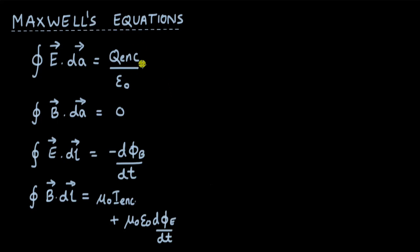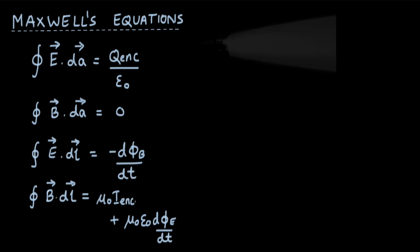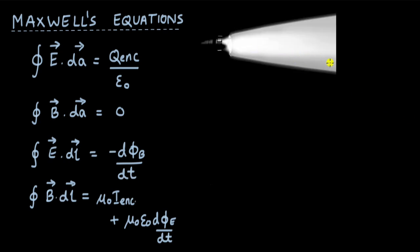These are Maxwell's equations, which describe the behavior of electric and magnetic fields and how they relate to each other. We also know that light is a form of electromagnetic wave, and in this video we will use all four of Maxwell's equations and develop some basic ideas about light or electromagnetic waves.